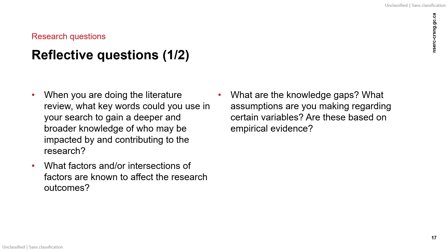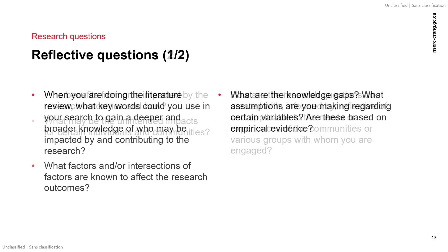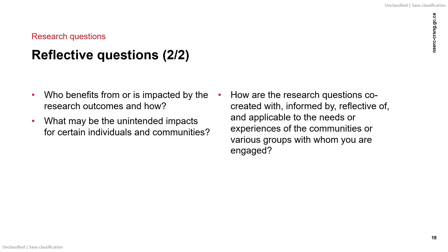What factors and or intersections of factors are known to affect the research outcomes? What are the knowledge gaps? What assumptions are you making regarding certain variables? Are these based on empirical evidence? Who benefits from or is impacted by the research outcomes and how? What may be the unintended impacts for certain individuals and communities?